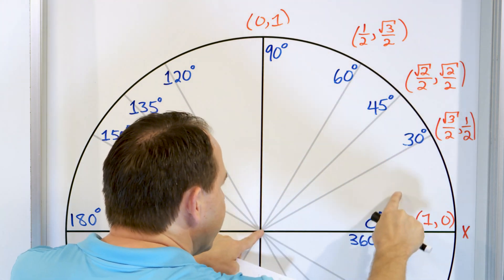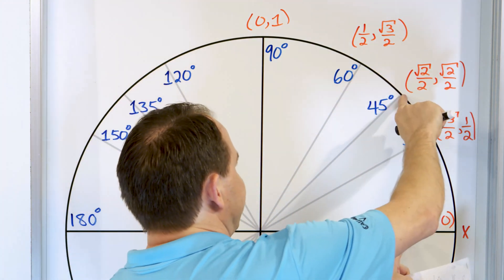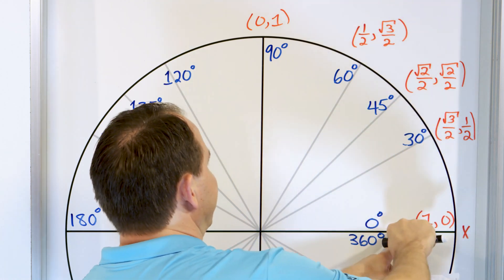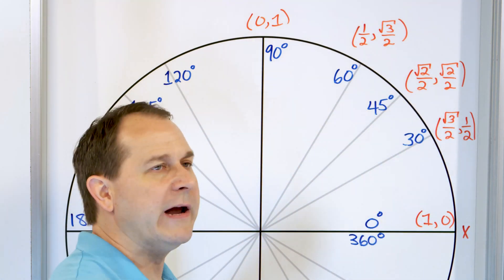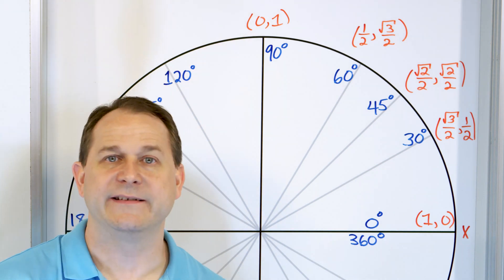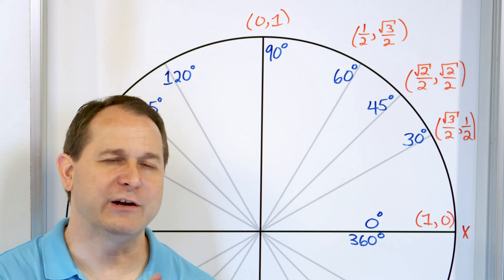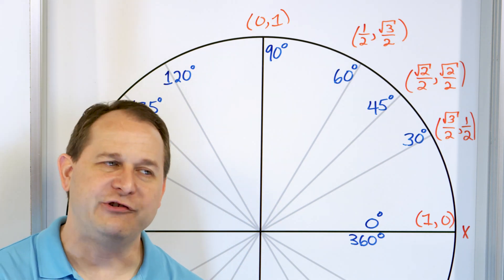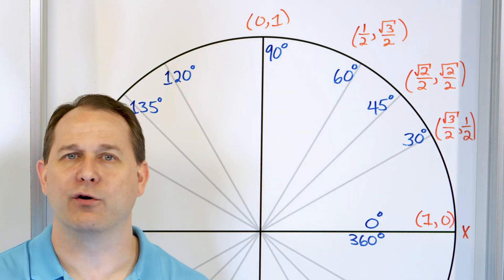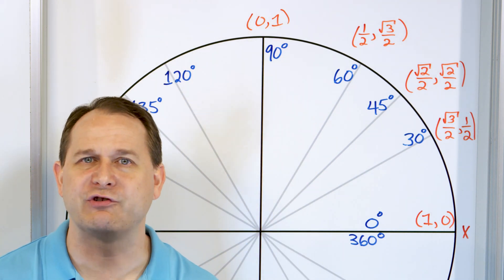Here's the hypotenuse. We go down — here's one leg of the triangle, and the other leg of the triangle would be over here. This forms the main triangle that we were drawing. Opposite over hypotenuse would be the sine. Adjacent over hypotenuse is the cosine. Tangent is opposite over adjacent. We drew it in terms of a triangle.